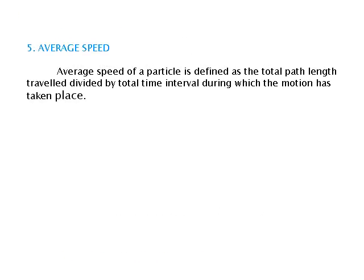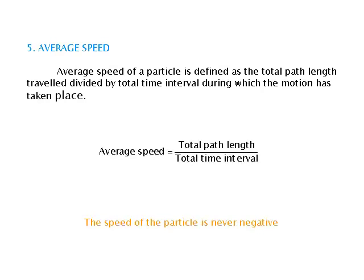Average Speed of a particle is defined as the total path length travelled divided by the total time interval during which the motion has taken place. Average Speed is equal to total path length upon total time interval. The speed of the particle is never negative.